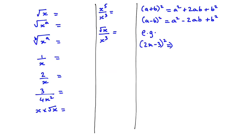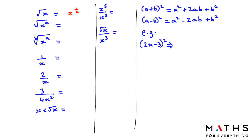When we are differentiating, we need to remember we cannot differentiate unless we simplify first. For example, if you have square root x, you know that square root x is x to the power of half. So we have to write the power in fraction form — you cannot write it as a radical.